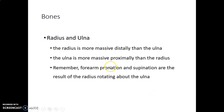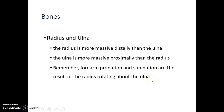Forearm supination and pronation occurs at the proximal and distal radioulnar joint, which is a pivot synovial joint. Supination and pronation are a result of the radius rotating around the ulna.